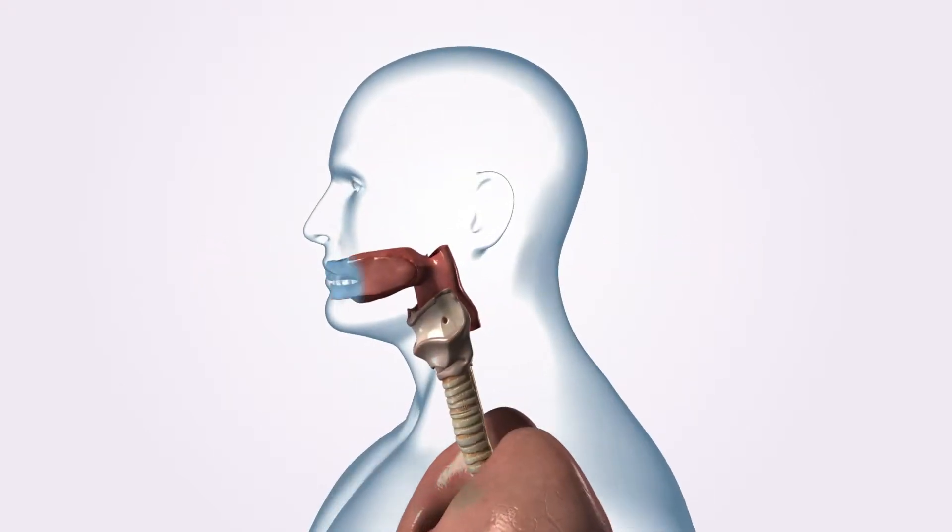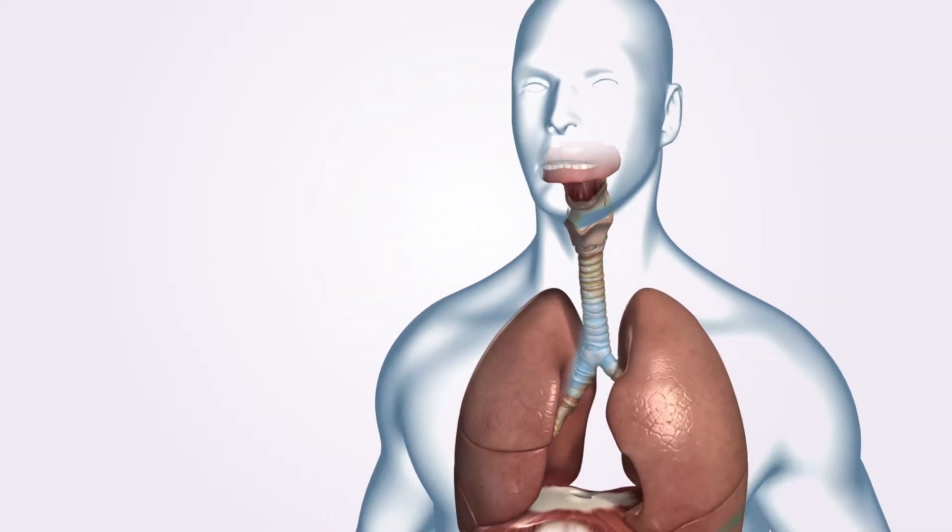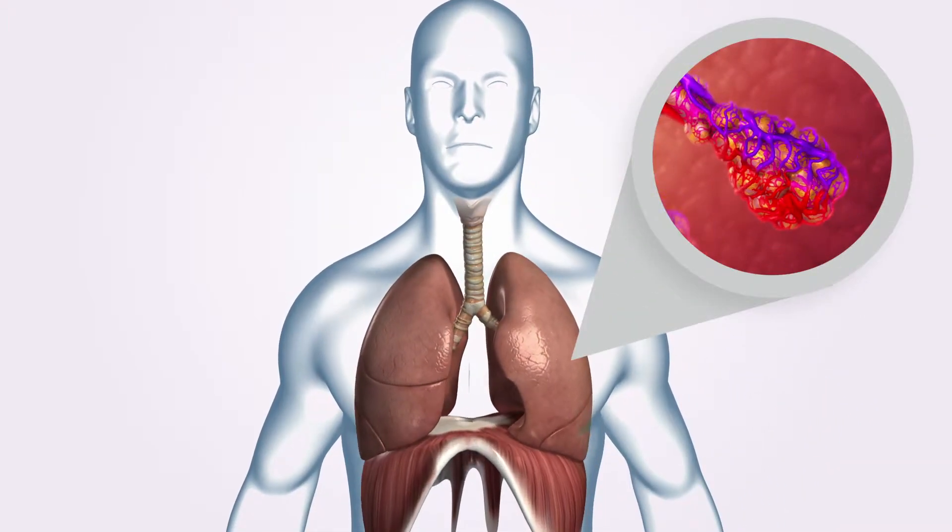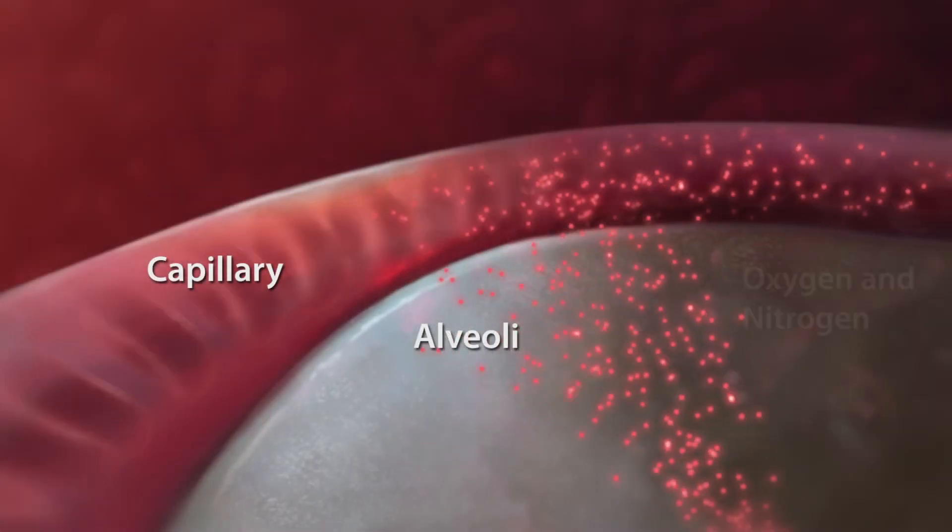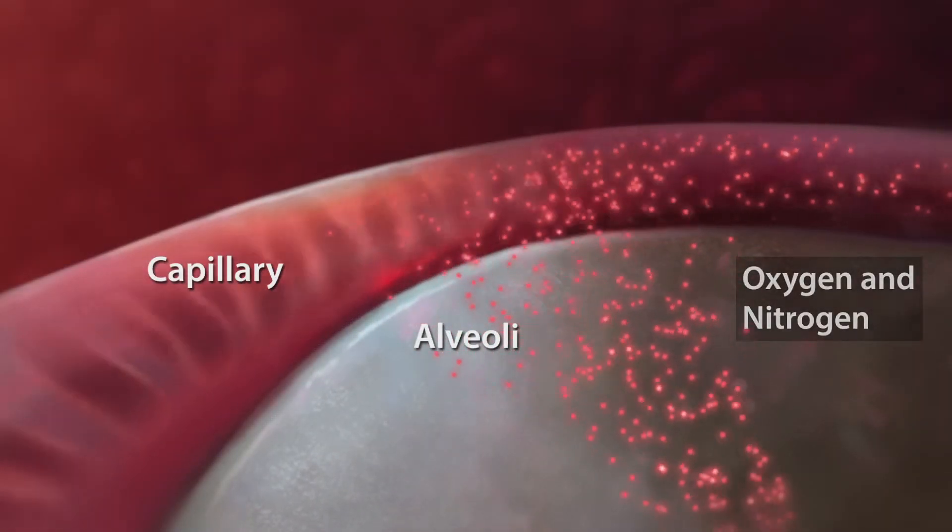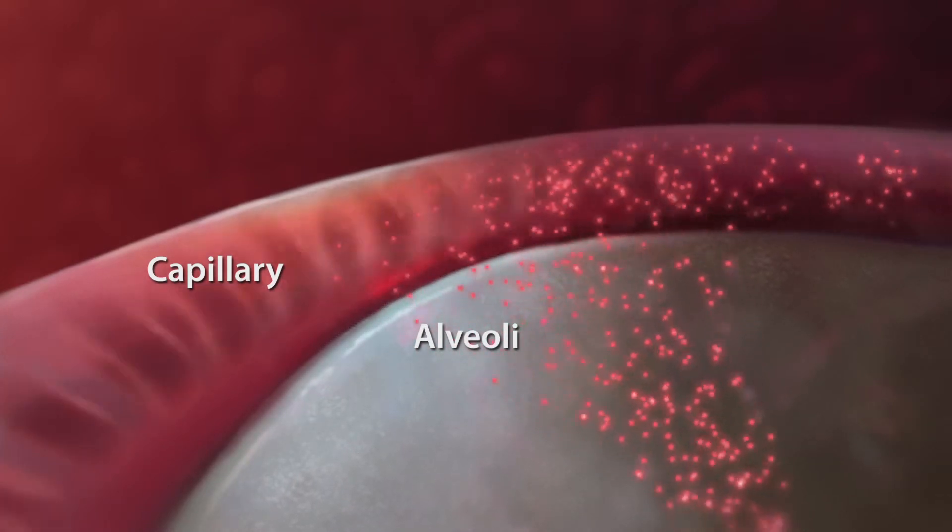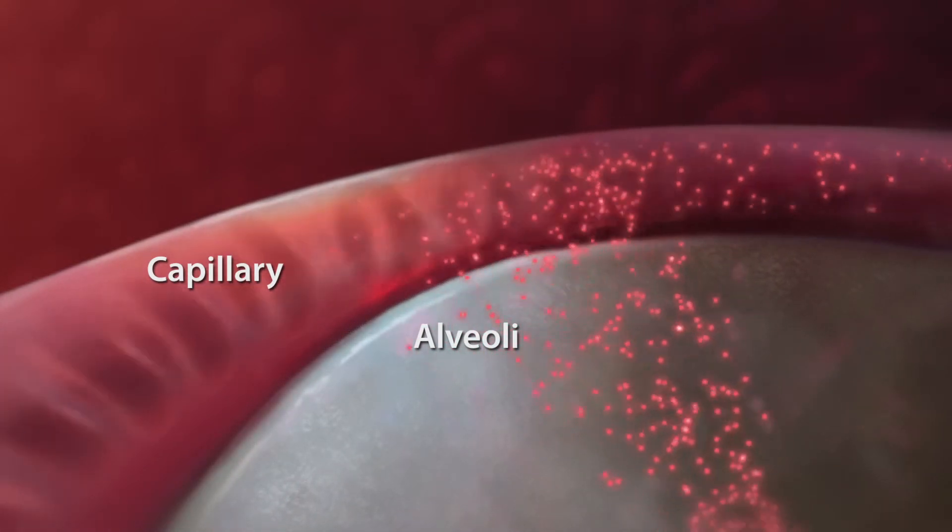Air transits the nose or mouth through the pharynx, larynx, trachea and bronchus to the alveoli where gas exchange takes place. Oxygen and nitrogen from the air that you breathe pass into the small blood vessels called capillaries which surround the alveoli.